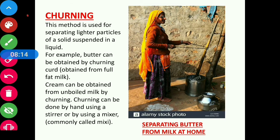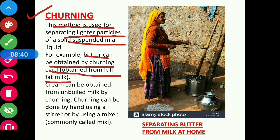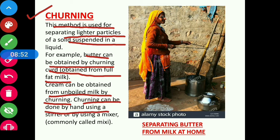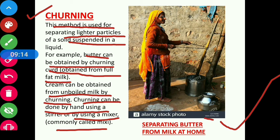The next process is churning. This method is used for separating lighter particles of a solid suspended in a liquid. For example, butter can be obtained by churning curd obtained from full fat milk, or cream can be obtained from unboiled milk by churning. Churning can be done by hand using a stirrer or by using a mixer commonly called a mixi. Here you can see this method being followed at home to obtain butter from milk.